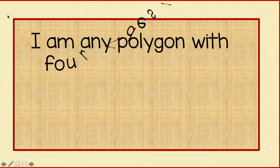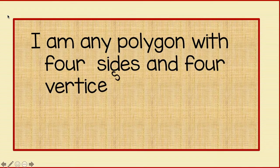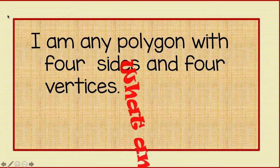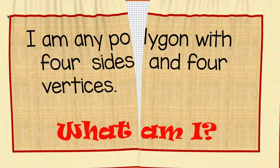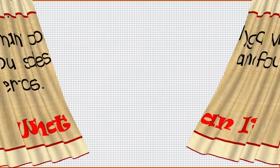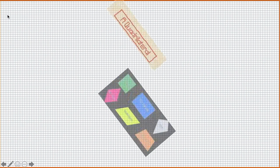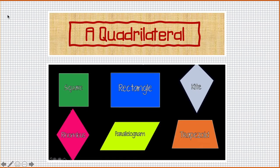Here is riddle number two. I am any polygon with four sides and four vertices. What am I? A quadrilateral. Good job.